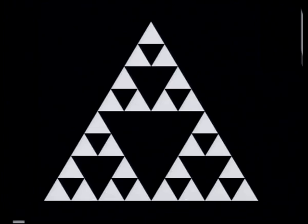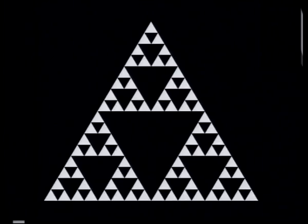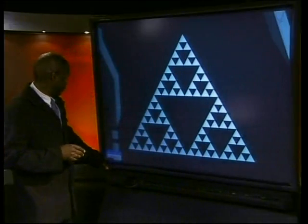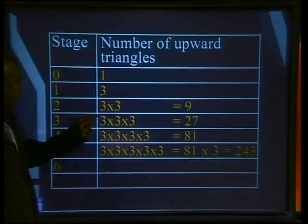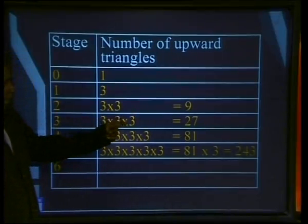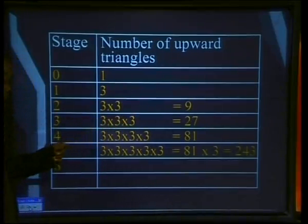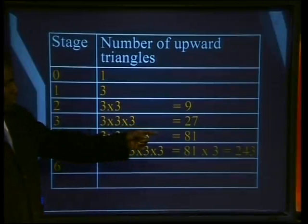What do you think will happen in stage three? How many triangles do you think we will make? If you count carefully, you should get 27 triangles. And what about stage four? After this, it gets rather small to draw. So let's look for a pattern to help us predict how many triangles there will be at each stage.